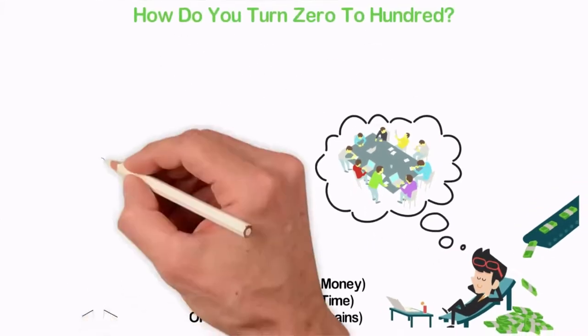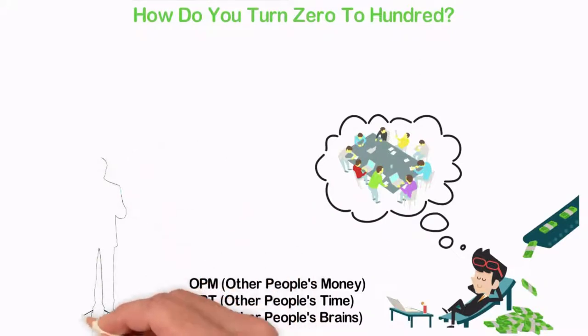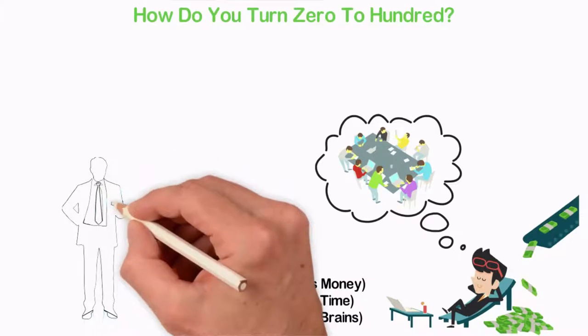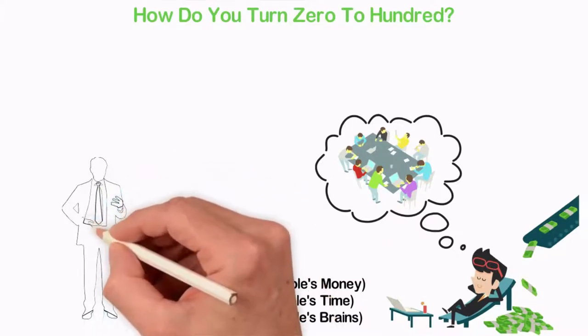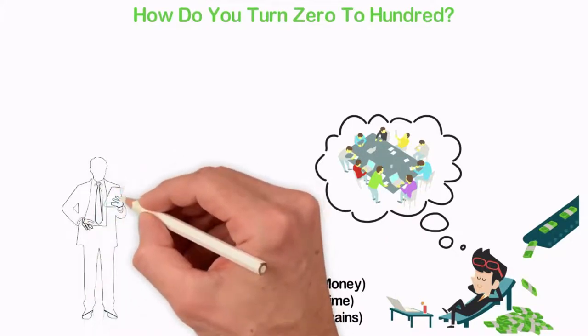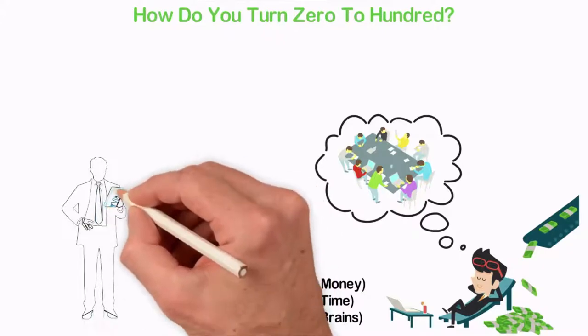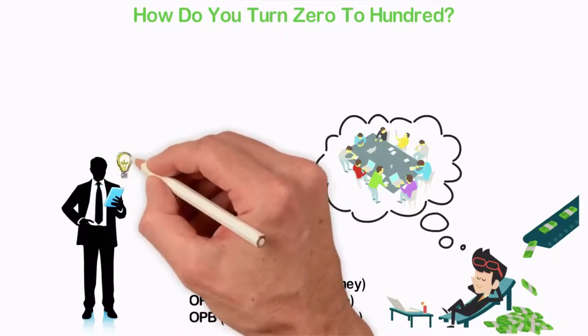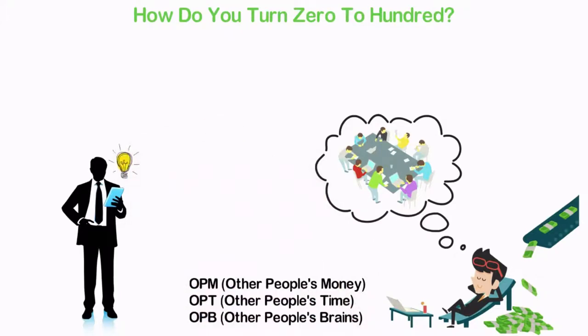What if you can learn how to get whatever you need from the people who do have it? What if you can get all the money you need to start a business from the people who have the money, all the time you need from the people who have it, and all the brain power you need from the people who have it? Yes, you actually can get everything you need to start a business from the people who do have those things.